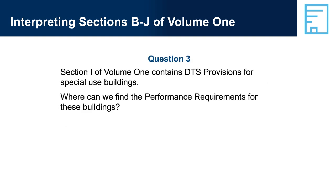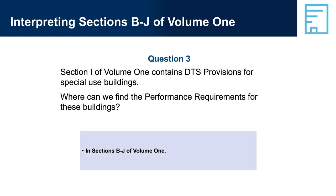Question 3: Section I of Volume 1 contains DTS provisions for special use buildings. Where can we find the performance requirements for these buildings? They are found in Sections B to J of Volume 1. Note: Section H is in NCC Volume 2.